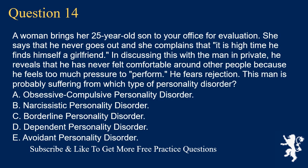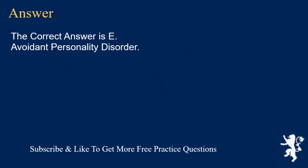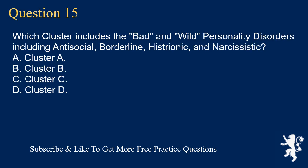Question 14. A woman brings her 25-year-old son to your office for evaluation. She says that he never goes out and she complains that it is high time he finds himself a girlfriend. In discussing this with the man in private, he reveals that he has never felt comfortable around other people because he feels too much pressure to perform. He fears rejection. This man is probably suffering from which type of personality disorder? A. Obsessive-compulsive personality disorder. B. Narcissistic personality disorder. C. Borderline personality disorder. D. Dependent personality disorder. E. Avoidant personality disorder. The correct answer is E. Avoidant personality disorder.